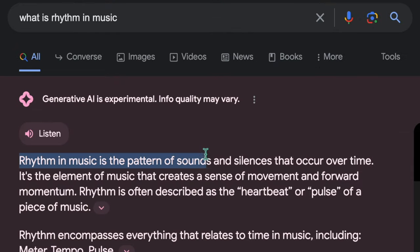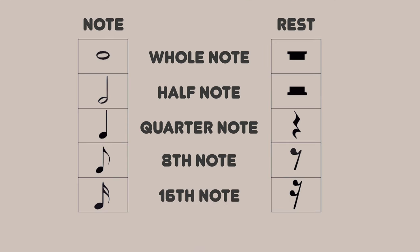Rhythm is sounds and silences. You don't always have to play on every beat — some beats are silent. That silent beat is called a rest. Rhythm involves quarter notes, eighth notes, sixteenth notes, and rests. Rhythm equals notes plus rests.